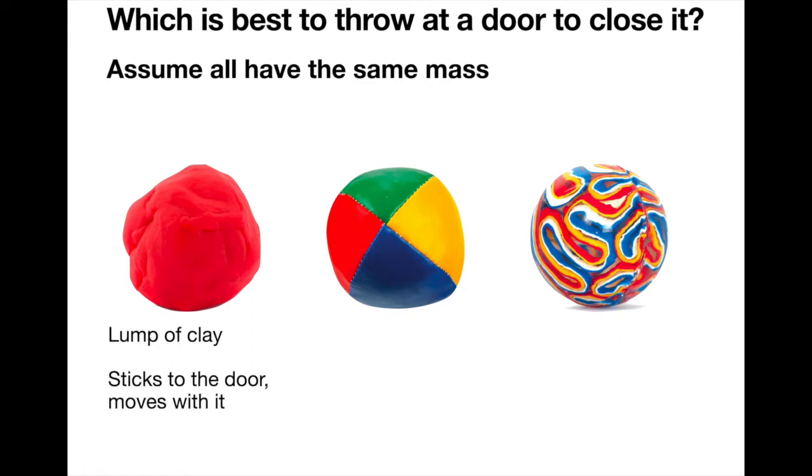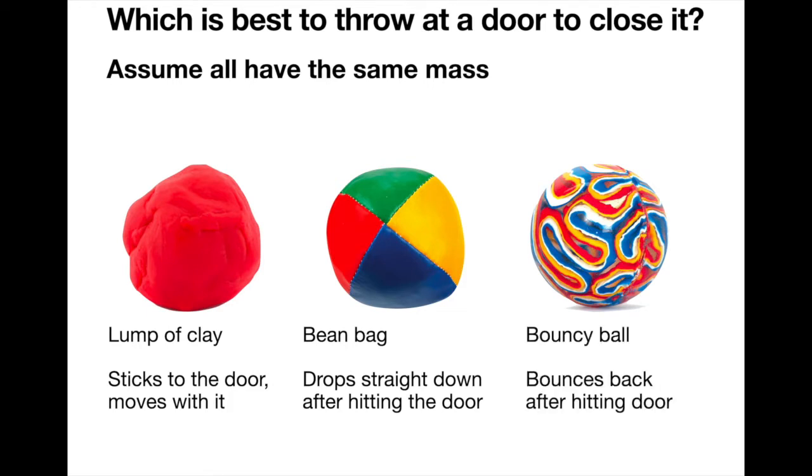You've got the lump of clay, which sticks to the door and moves with it. You've got the bean bag that hits the door and drops straight down after hitting the door. And the bouncy ball, which bounces back after hitting the door. So which one would you pick?